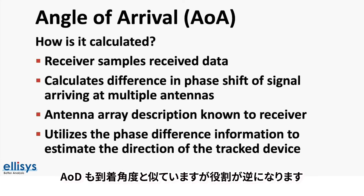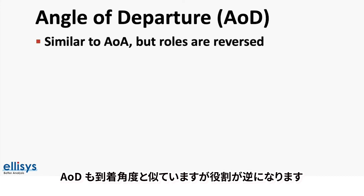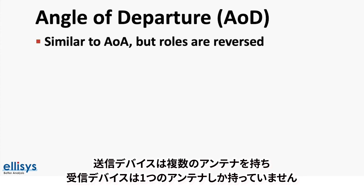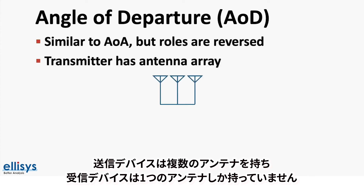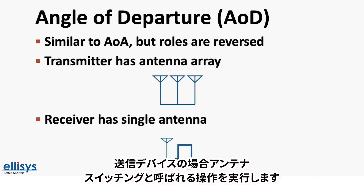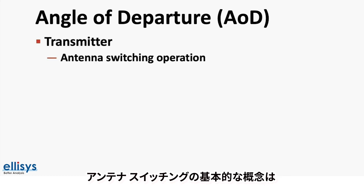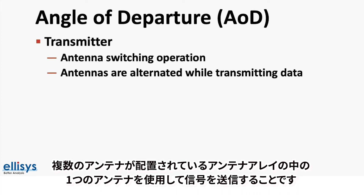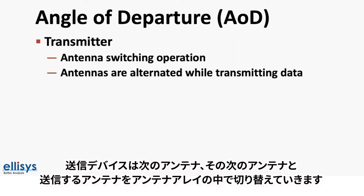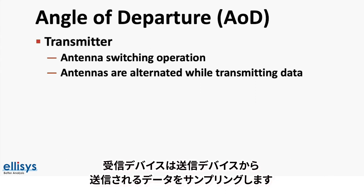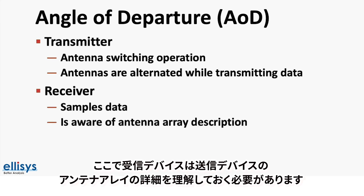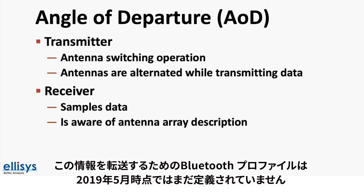In the case of angle of departure, it is similar to angle of arrival, but the roles are reversed. Here, the transmitter is the device equipped with multiple antennas, and the receiver has only a single antenna. The transmitter performs an operation called antenna switching — the basic concept is to use a single antenna at a time to transmit the signal, then switch to the next antenna in the array, and so on. At the receiver end, it samples the data being sent by the transmitter. Knowing the description and details of the antenna array is needed at the receiving end, and methods for transferring this information are defined via Bluetooth profiles, which had not yet been defined as of the recording of this video.